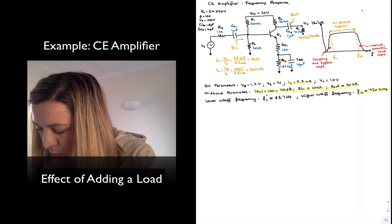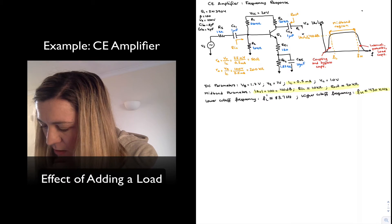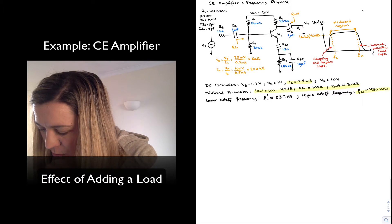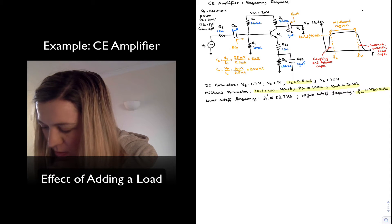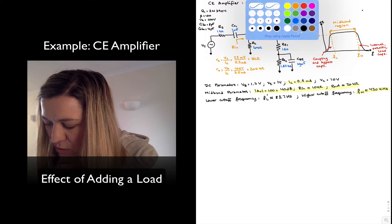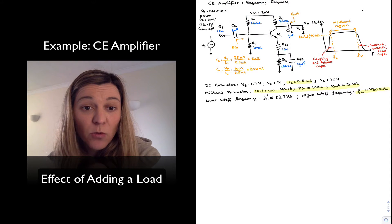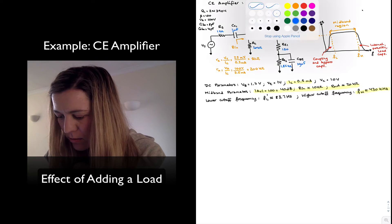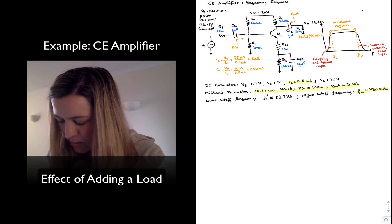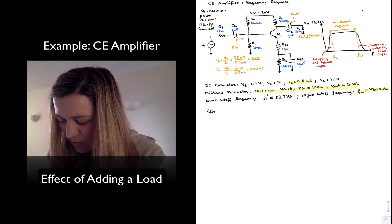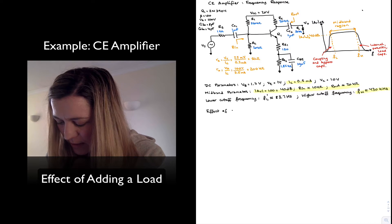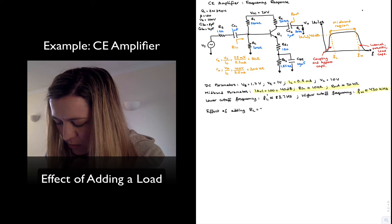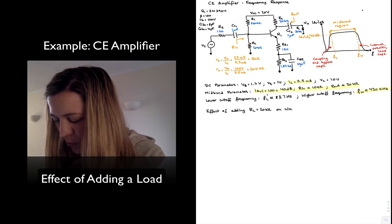I'm going to modify RL and make it equal to the collector resistor, or 20 kilo ohms, just to clearly see the effect. I'm going to study the effect of adding RL equals 20 kilo ohms on circuit performance.